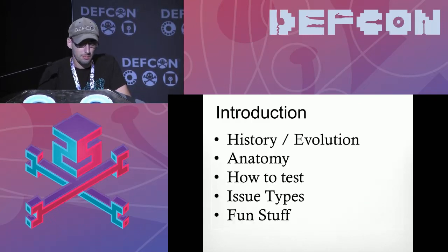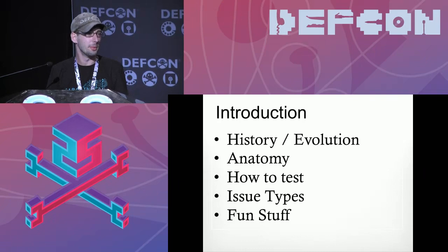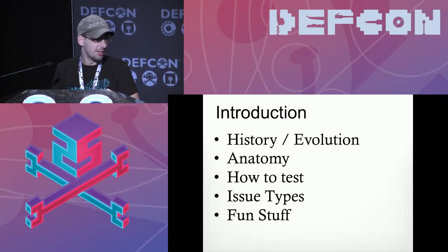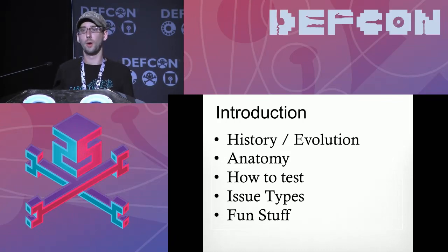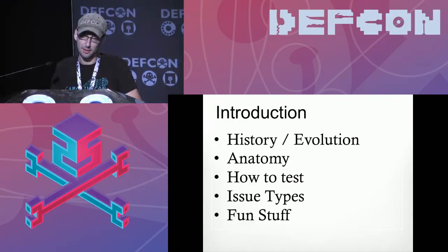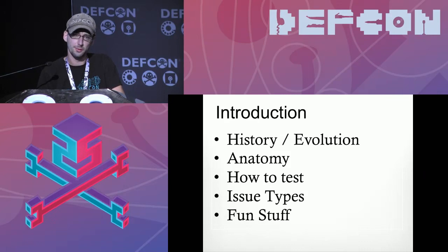What we're going to talk about is a brief history and evolution of phone systems — nothing too big or in depth. Not going to talk about SS7 carrier side stuff. It's mostly going to be about VoIP, modern phone systems, testing them externally from the dial interface, how to test those, the issue types you'll find, and we'll map those to the OWASP Top 10 as best we can. There's some overlap between external and internal testing, and we'll finish off with some fun tricks.